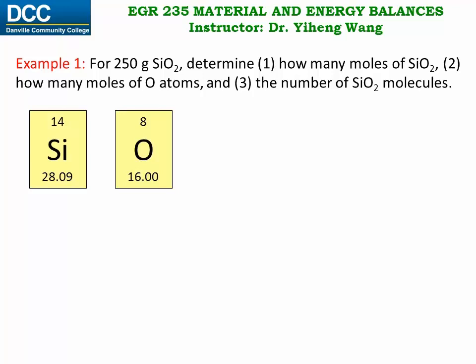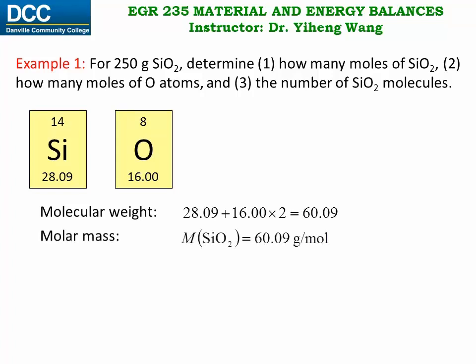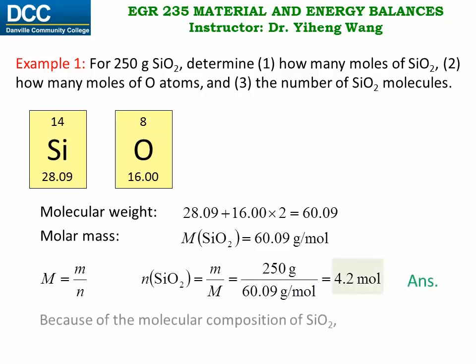So we look up these two elements from the periodic table, and we can calculate the molecular weight of silicon dioxide from the atomic weights of these two atoms. For each silicon dioxide molecule, there is one silicon atom and two oxygen atoms, and therefore the molar mass for silicon dioxide is 60.09 gram per mole. And since molar mass is defined as mass over number of moles, from here we can calculate the number of moles of silicon dioxide to be 4.2 mole, and that answers the first part of this problem.